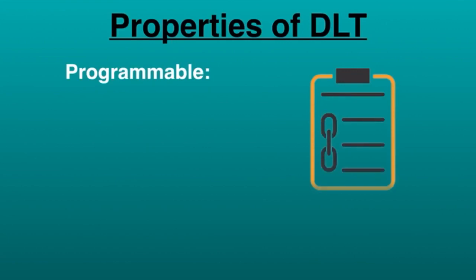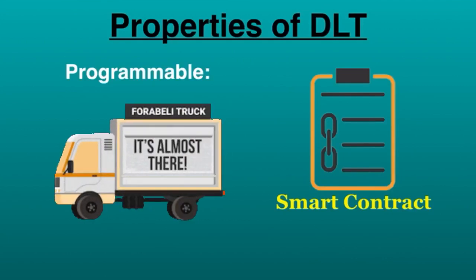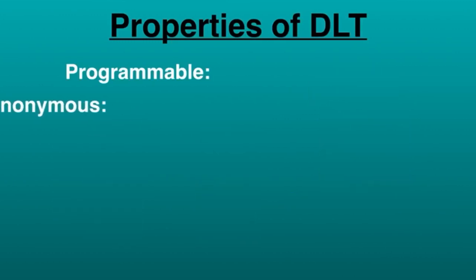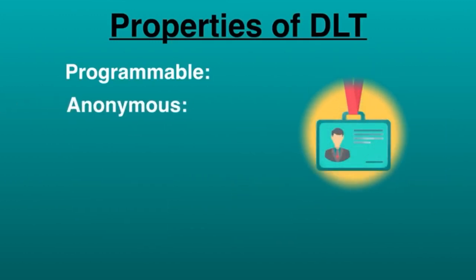For example, if buyer and seller don't know each other and there is a trust issue, smart contracts enable secure payment between them. When goods are delivered, money automatically goes into the seller's account. Identity of the participants can be either anonymous or pseudonymous.